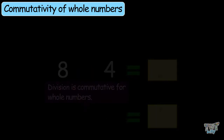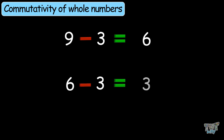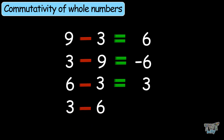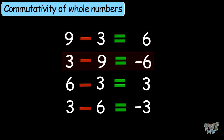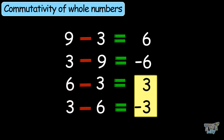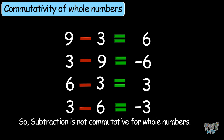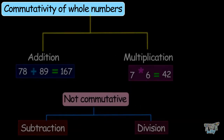Here we have another example: 9 minus 3 — what's the answer? It's 6. Now 3 minus 9 — the answer will be negative 3. So 9 minus 3 and 3 minus 9 have different answers, and 6 minus 3 and 3 minus 6 have different answers. So we learned that subtraction of whole numbers is also not commutative. Today we have learned the property of commutativity of whole numbers.